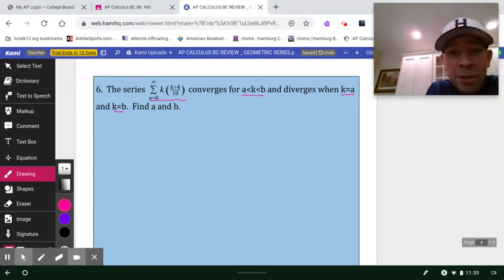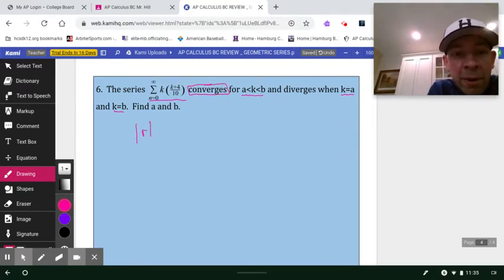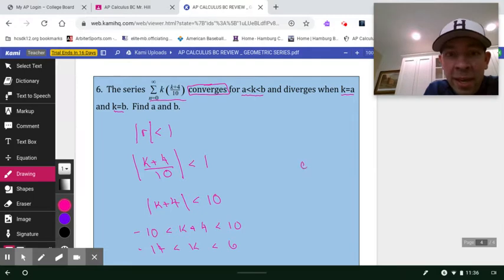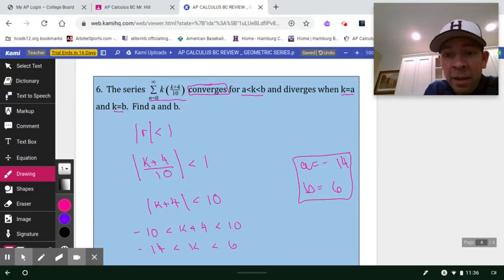Well, here's what you know. How do you know whether a geometric series converges or not? What's got to happen is that absolute value of r has got to be less than 1. So your k plus 4 divided by 10 has got to be less than 1. In other words, the absolute value of k plus 4 has got to be less than 10. And I could say, negative 10 has got to be less than k plus 4, which has got to be less than positive 10. In other words, negative 14 is less than k, which is less than 6. So I'm thinking to myself, a equals negative 14, b equals positive 6.